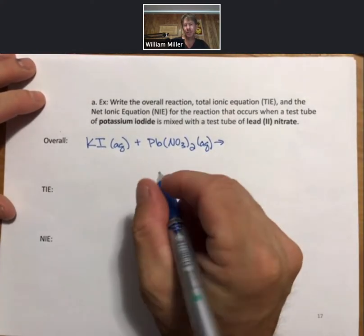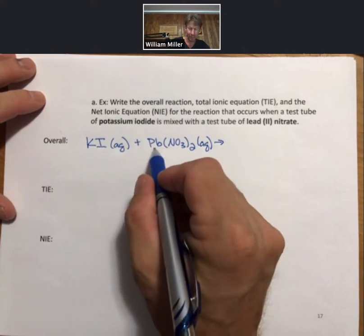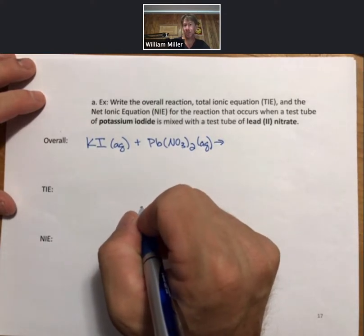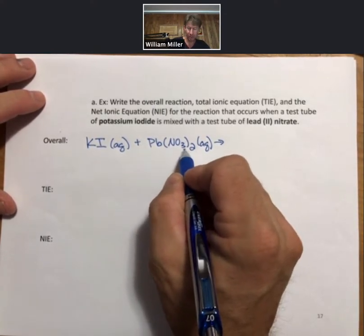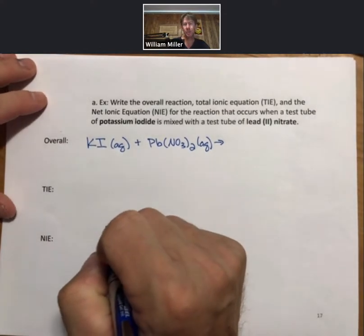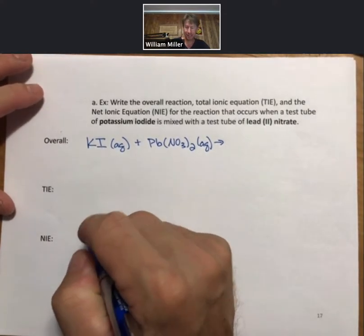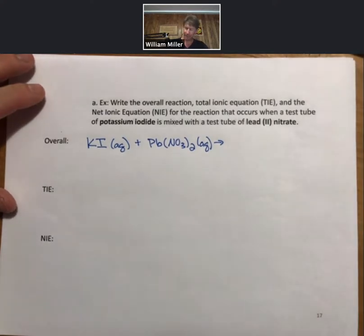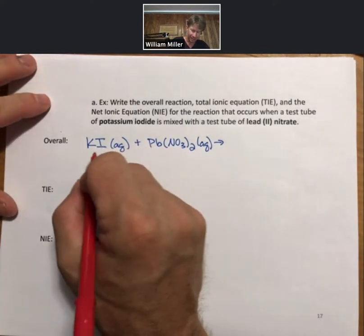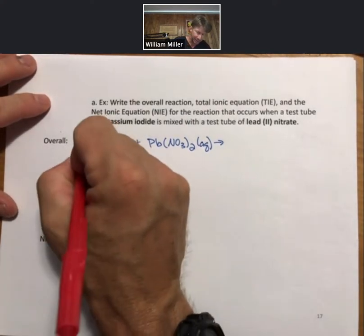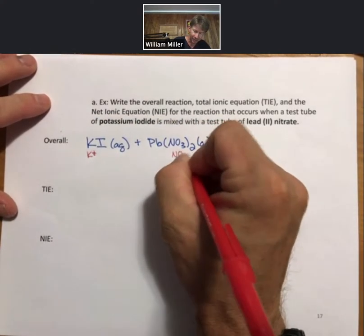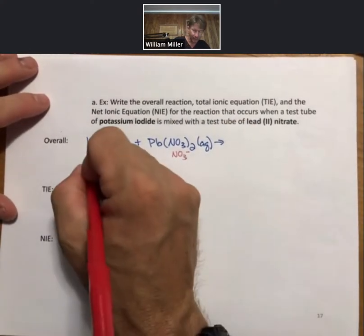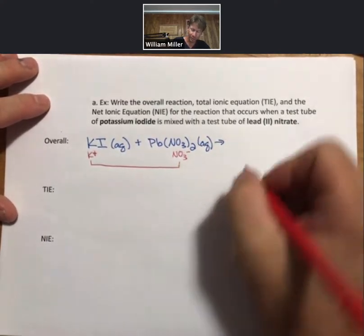It turns out that nitrate is a minus one ion. Lead is a plus two. Therefore, we need two nitrates for the formula unit of this ionic compound. Now, the way that these work is that the positive ion, which is the K plus, and the negative ion from the other reactant, they are going to team up to form one of the products.